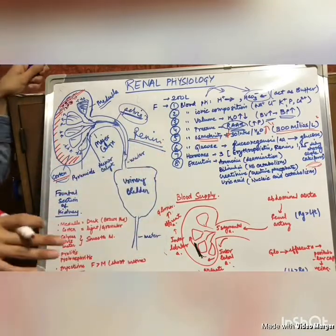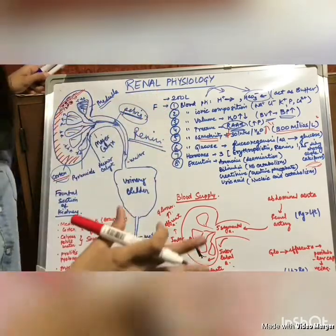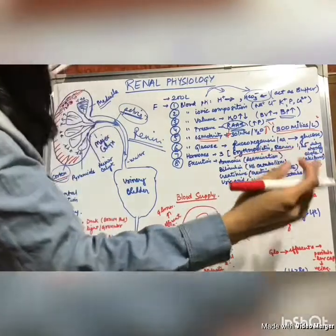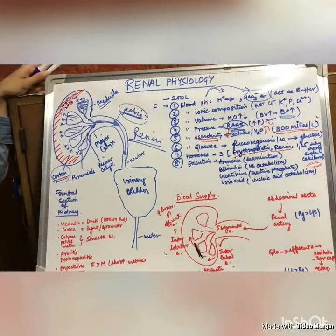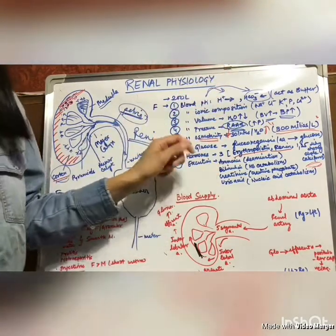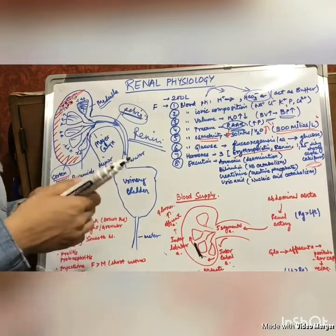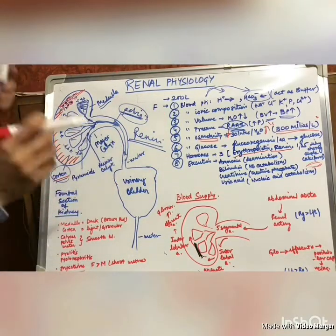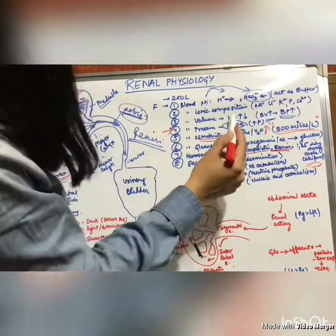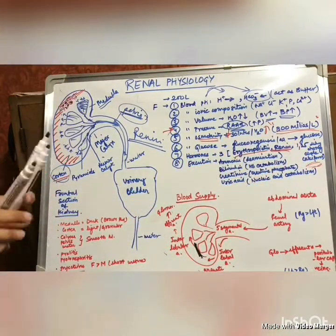The seventh function is hormone secretion — a very important function. There are three hormones released from the kidney: erythropoietin, renin, and 1,25-dihydroxycholecalciferol. Erythropoietin is responsible for RBC production; without it there will be no red blood cells. Renin activates the RAAS system.